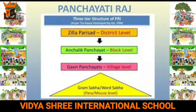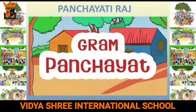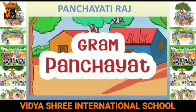The Panchayati Raj is a three-tier system — it works at three levels: the Gram Panchayat at the village level, the Block Samiti or Panchayat Samiti at the block level, and the Zila Parishad at the district level.